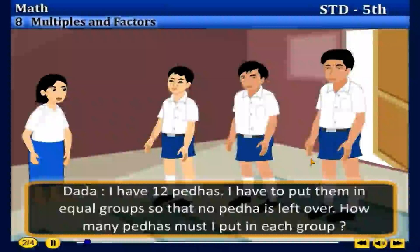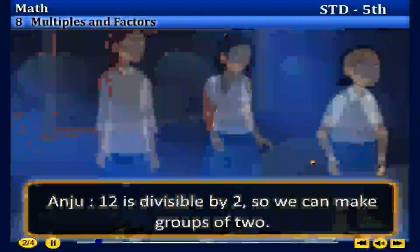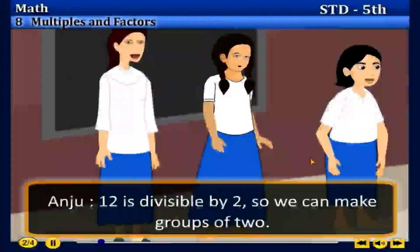Sanju: Putting into groups means dividing. None left over means that the remainder will be 0. Anju: 12 is divisible by 2, so we can make groups of 2.